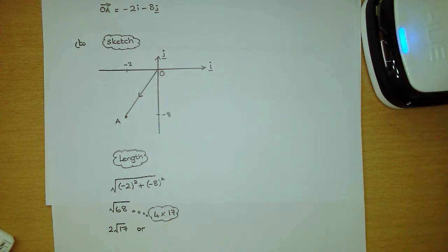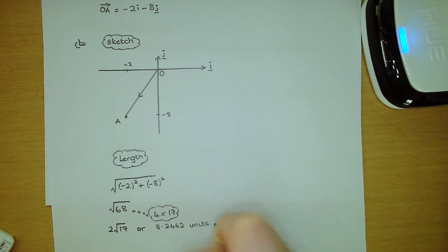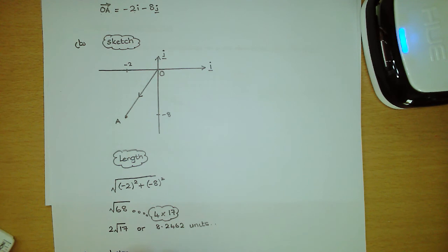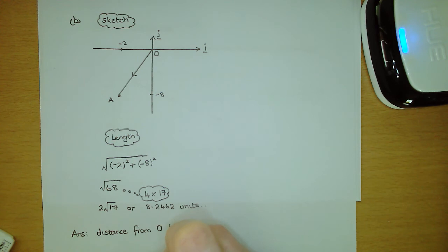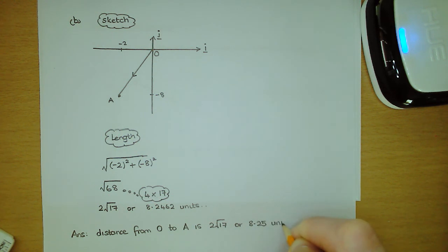If we go to the calculator and type in the square root of 68, that gives us 8.2462 units. So our final answer — the distance from O to A — is 2 root 17, or 8.25 units to 3 significant figures.